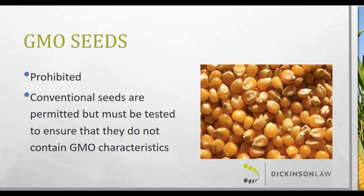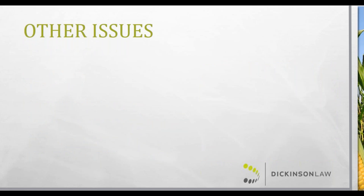If an operator is only transitioning part of their operation to organic — so they have part conventional and part organic — they must make sure not to accidentally cross-contaminate the organic section with conventional seeds. That means cleaning out the planter before planting organic seeds, or planting organic first and then doing conventional. The regulations also require attention to waterways flowing through an organic field from a conventional field, as those can transport banned and prohibited substances, which could cause the operator to lose their organic certification and, with it, the price boost.